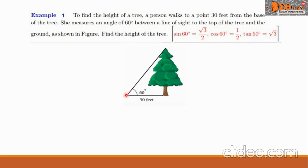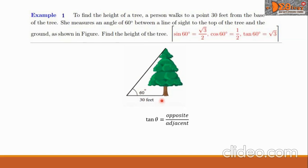To illustrate the problem, we have this figure — the tree is standing tall and there is a person at a point 30 feet from the base of the tree. The angle of elevation of that person to the top of the tree is 60 degrees, and we are required to find the height of the tree. In relation to the right triangle, the height of the tree corresponds to the opposite side of the angle, and the 30 feet corresponds to the adjacent side. This means we need to use the tangent ratio, which is equal to opposite over adjacent.